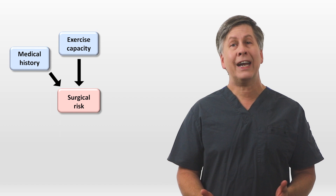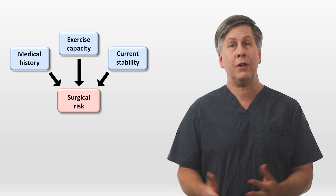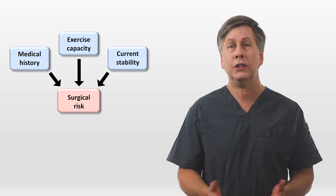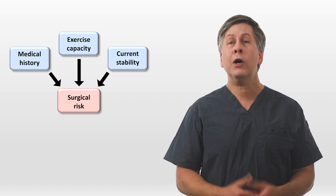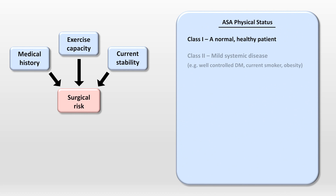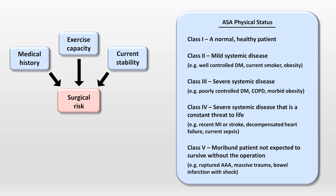Another category contributing to risk is the patient's current stability. For example, is the patient currently hemodynamically stable without the need for inpatient-specific therapies? Are they relatively stable but requiring IV fluid support or intravenous vasoactive medications? Or are they unstable in septic shock? The American Society of Anesthesiologists combined multiple factors into a five-tier classification system ranging from ASA Class I for a normal healthy patient to ASA Class V for a moribund patient not expected to survive without the operation.